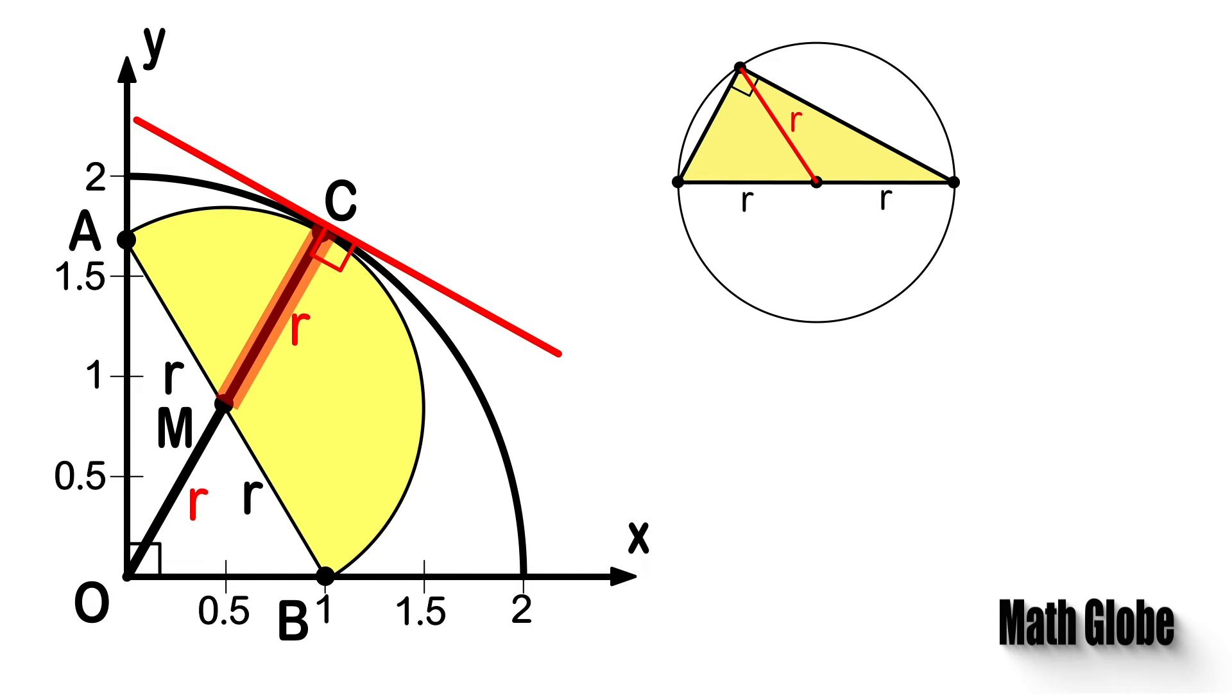Since MC is a radius of the half disk, it will be also perpendicular to the tangent of the half disk at C. Then the tangent lines of the half disk and the quarter circle coincide, and the half disk will be internally tangent to the quarter circle all the time.